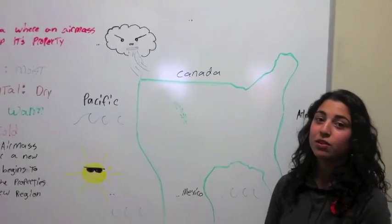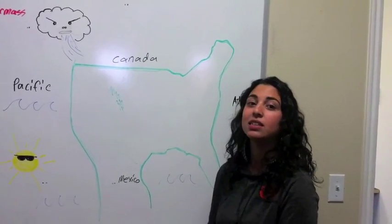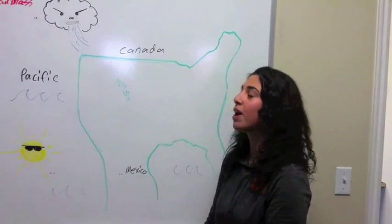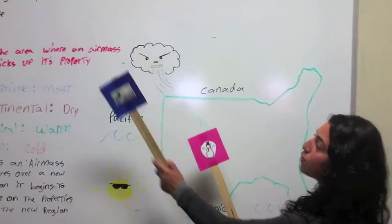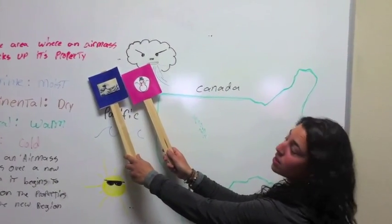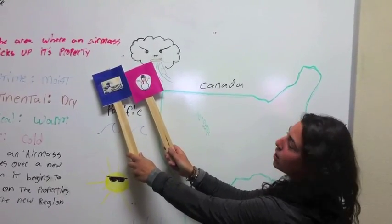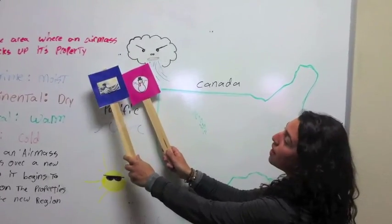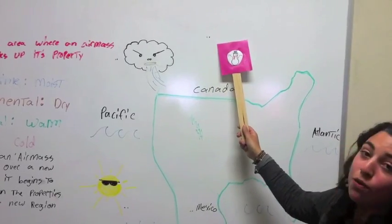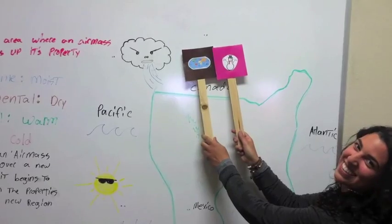Not only are there the four properties, but for it to be an air mass, it needs temperature and moisture. If an air mass is over the ocean and it's up north, so it's cold, it'll be maritime polar. But if it's still up north, yet it's over land, it will be polar continental.